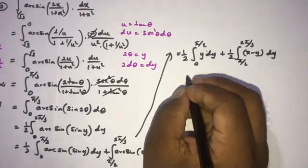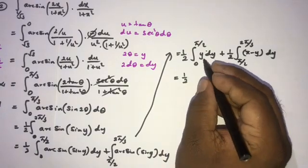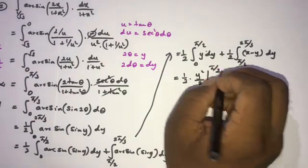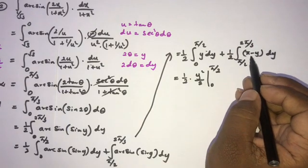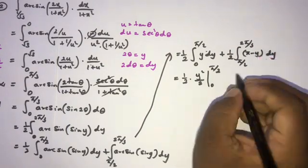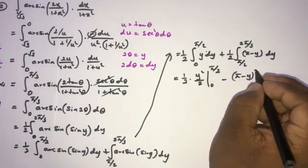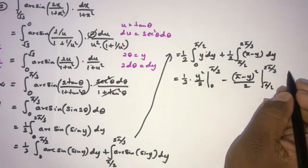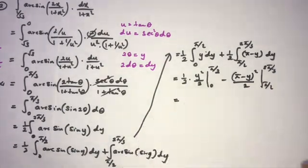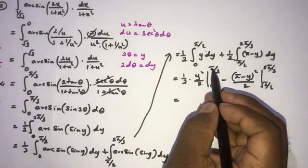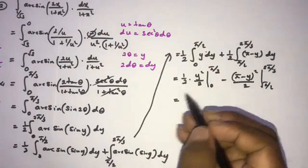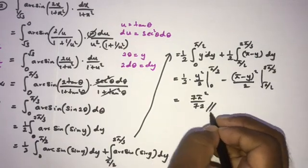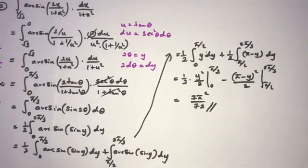Integrating: (1/2)·[y²/2 from 0 to π/2] plus (1/2)·[−(π−y)²/2 from π/2 to 2π/3]. Plugging in the limits and simplifying gives the same answer: 7π²/72. If you like this video, please subscribe to this channel. Thank you for watching.